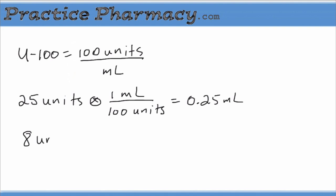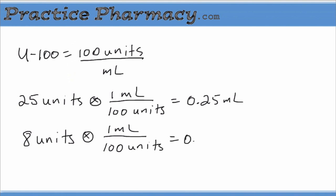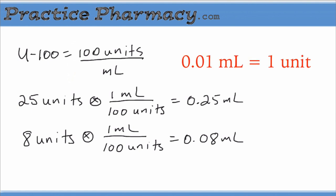If we wanted 8 units of insulin, we would multiply by that conversion factor — 1 milliliter over 100 units. The units cancel again: 8 divided by 100 is 0.08 milliliters, or eight hundredths of a milliliter. From this, we can understand that each hundredth of a milliliter contains one unit of insulin.